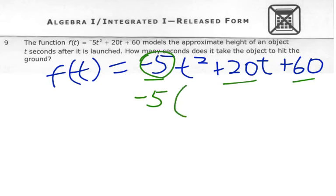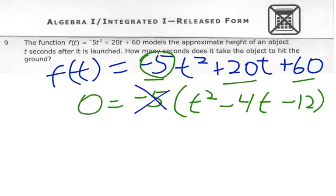So negative 5 times what gives me that? That would be t squared. Negative 5 times what gives me 20t? A negative times a negative, so that would be minus 4t. And then negative 5 times what gives me 60? That would be a negative 12. And again, we're setting this equal to 0 in order to solve it. Now that negative 5, honestly, we just totally got rid of it, because we don't care about it anymore.